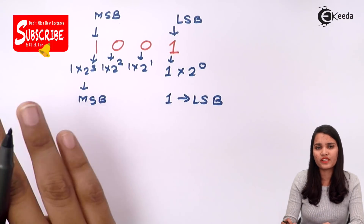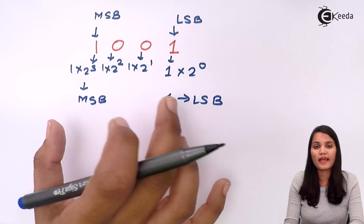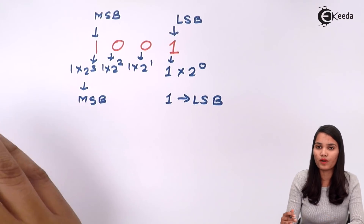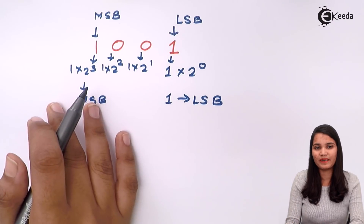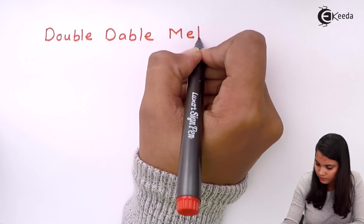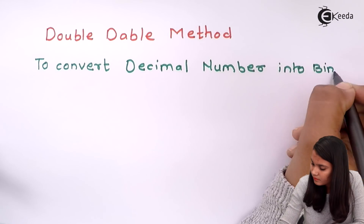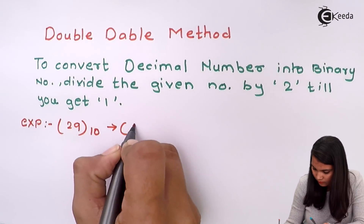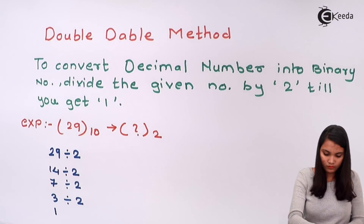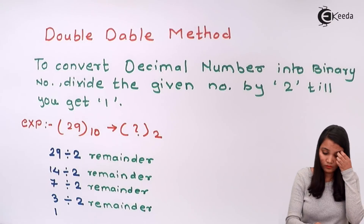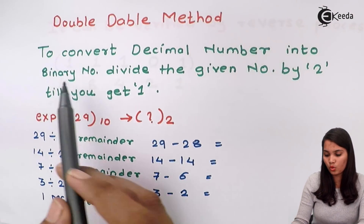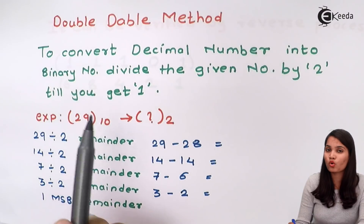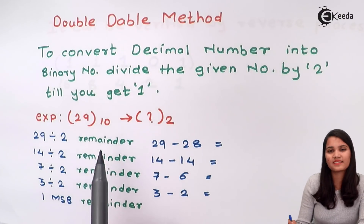So before going into any conversion, having LSB and MSB understanding plays a very important role. In the double-double method, first you have to write down the MSB and then go towards the LSB. Now let's see the actual double-double method. To convert the given decimal number into the binary number, we have to divide the given number by 2 until we get the quotient value as 1. Now let's take an example and see this method in detail.